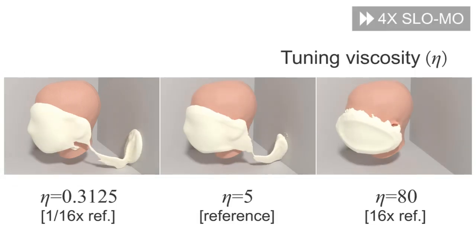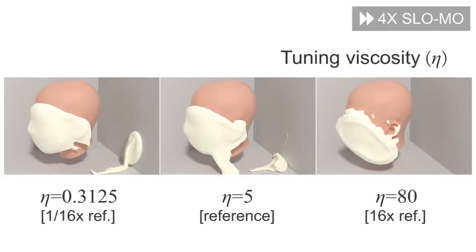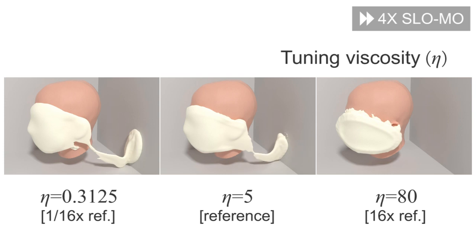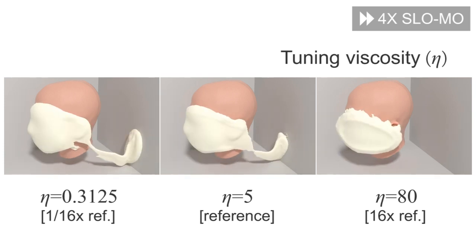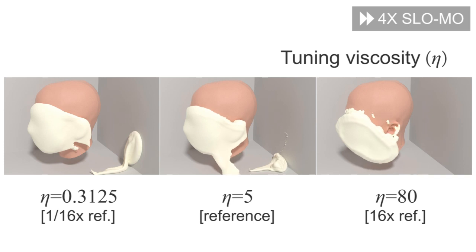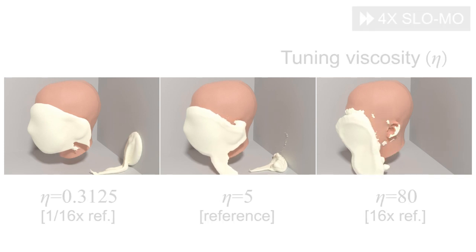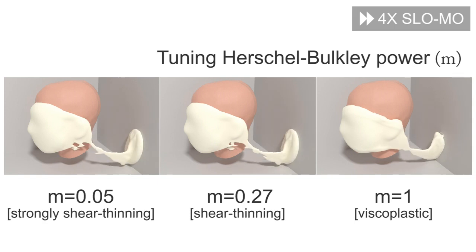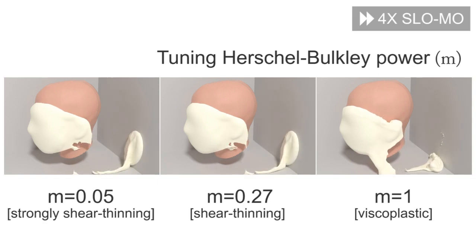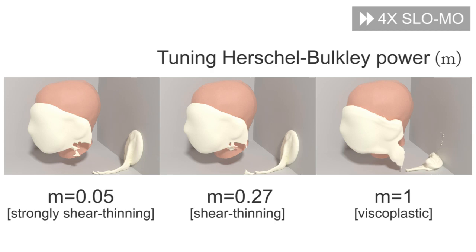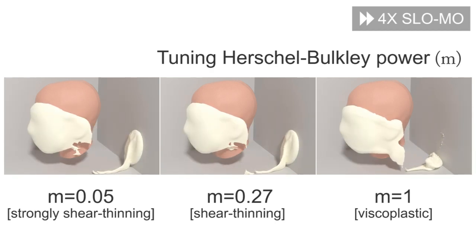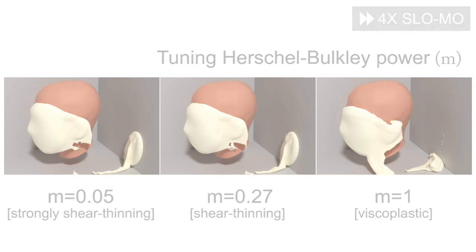At higher viscosities, the material appears more damped and viscous, while at lower viscosities, the material flows more readily. With a high Herschel-Bulkley power, the flow rate is lower under large stresses. With a low Herschel-Bulkley power, the material flows more easily with large stresses, capturing shear thinning behaviors.